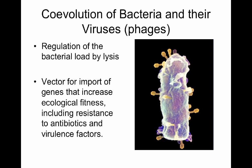There is another component of this complex microbiome. Bacteria are infected with viruses just like we are. Bacteria also have their own viruses, which we call bacteriophages, and they have two important properties. They can regulate the bacterial load in an ecosystem by lysing the bacteria so that they are eliminated. But these viruses can also function as a vector for import of genes that increase ecological fitness, including resistance to antibiotics and all the properties that add to a bacterium's ability to cause infections — what we call virulence factors.